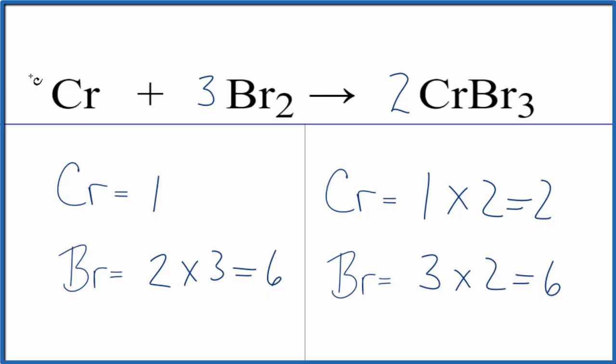For the chromium, it's by itself. So we just need to have two chromiums on this side. We have one. We'll put a two. One times two, that is two.